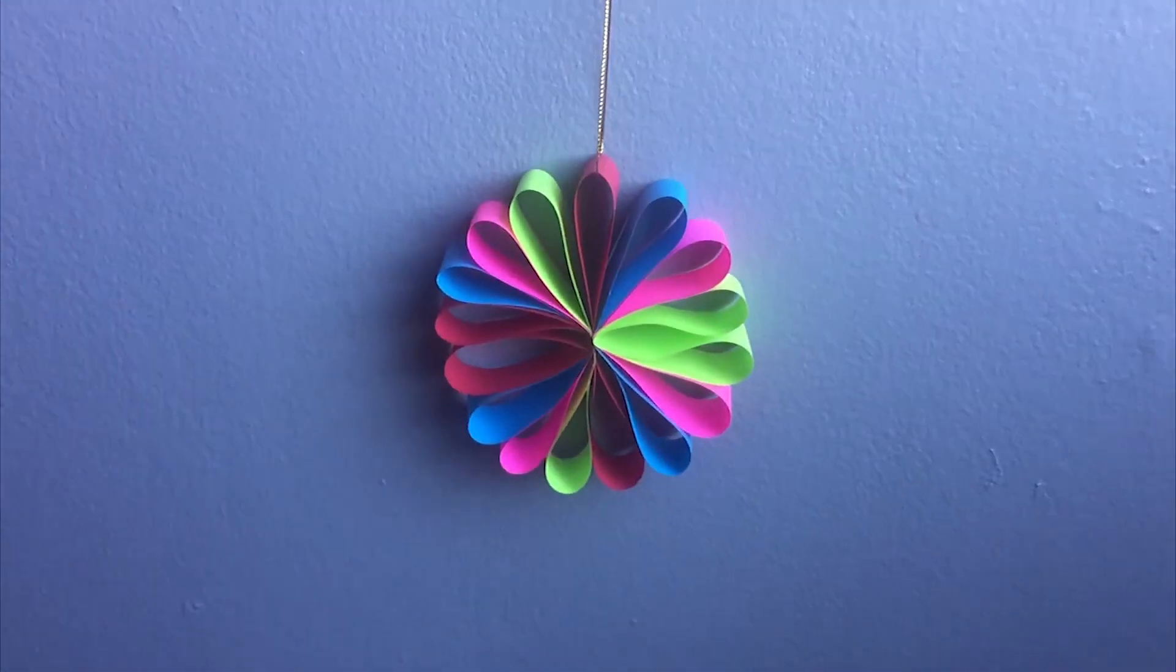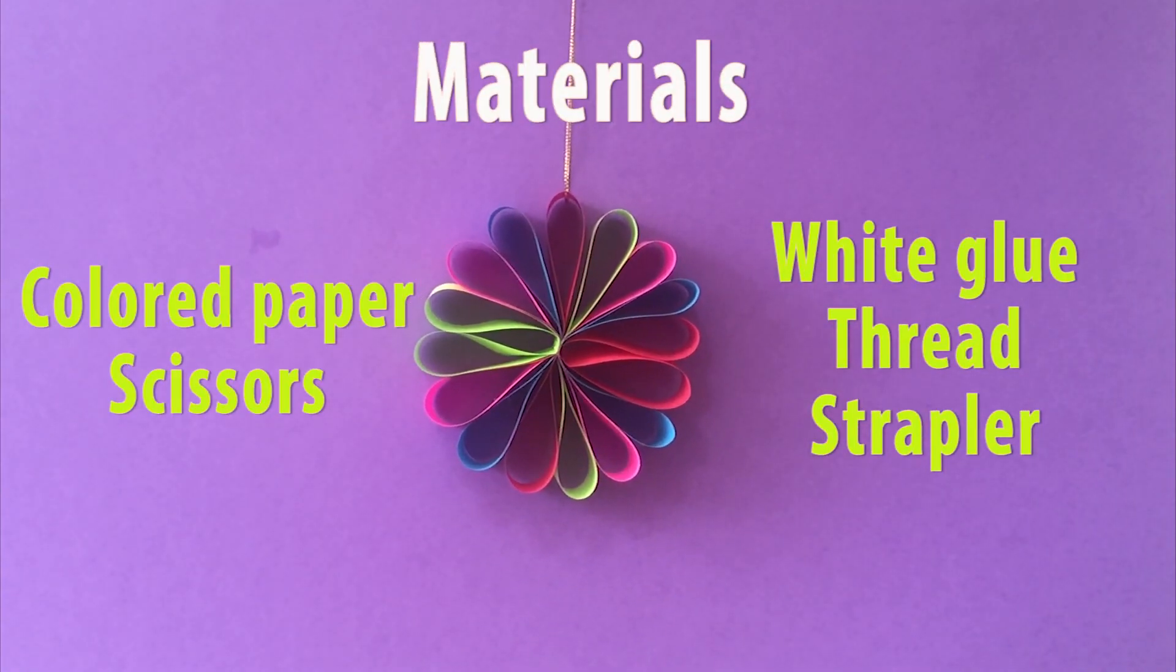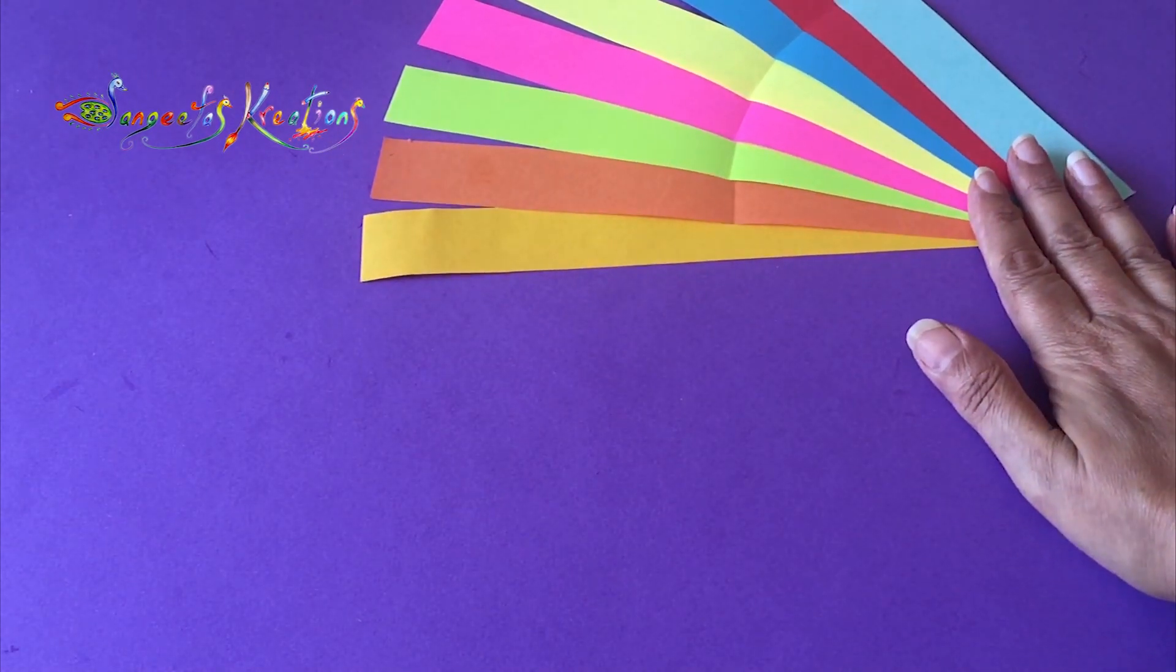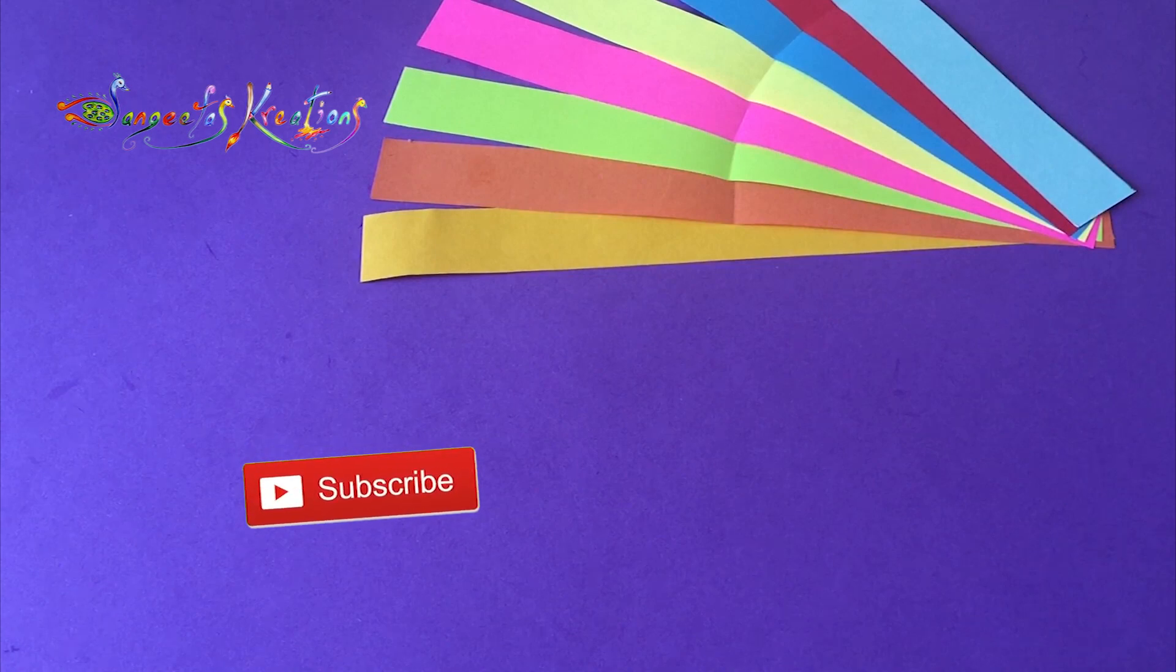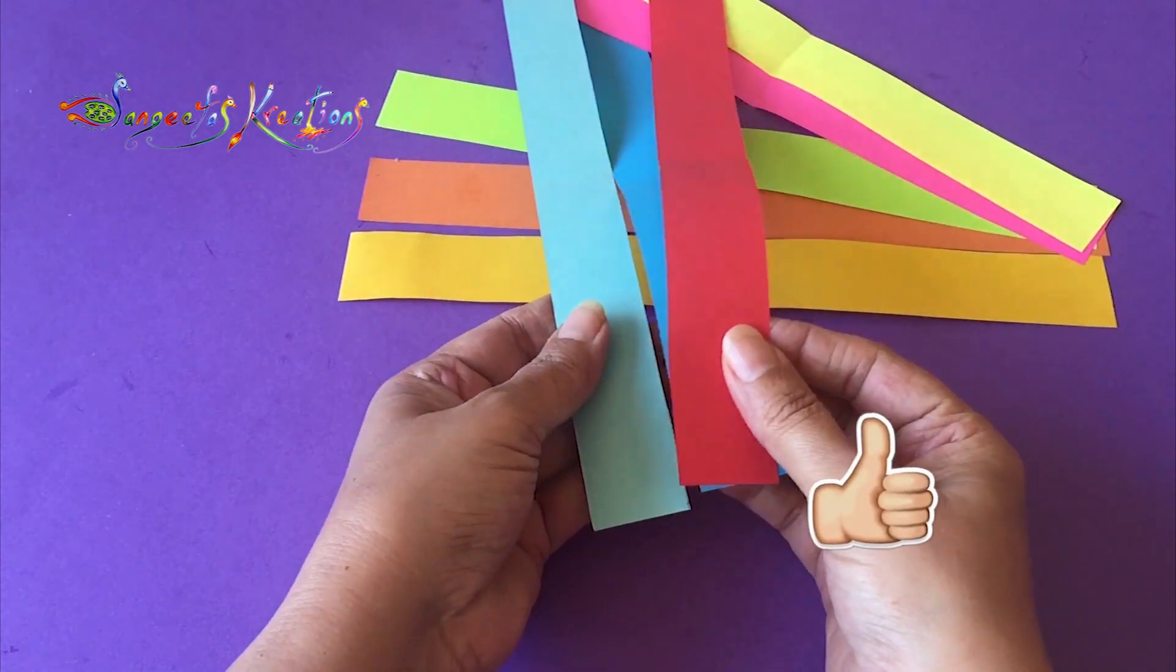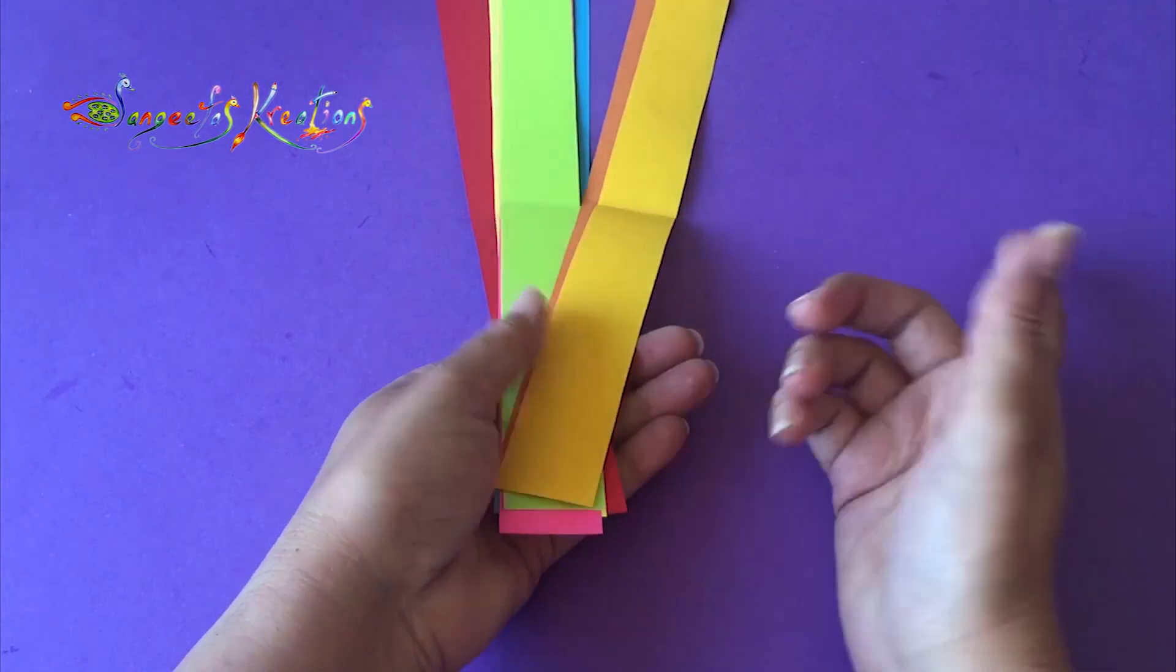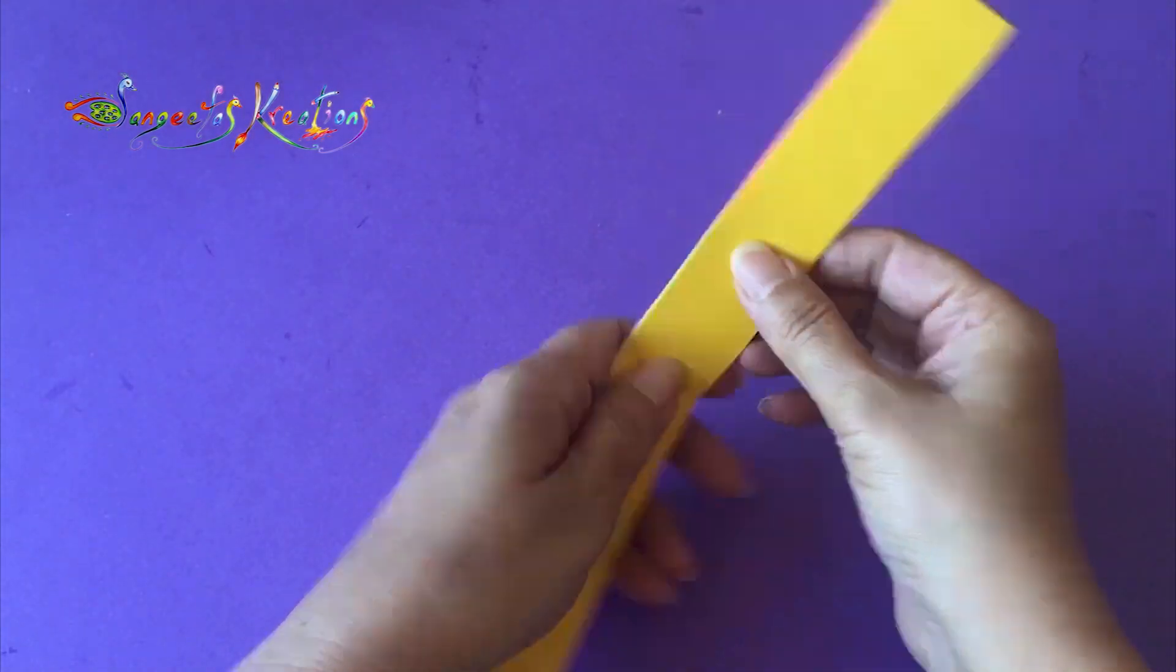For this you will need: take eight strips of paper with different colors per your choice. You can use two colored paper or you can use the same colored paper. It's three centimeters by 28 centimeters long. Gather all the strips together this way and fold it in the center.